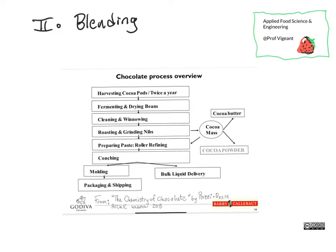This graphic shows a similar process flow diagram to the one I just drew for milk, except this one is for chocolate. We start at the top with cocoa pods, which are what is harvested from the tree, and end up at the bottom with actual chocolate. What I want to call your attention to is what happens after the nibs are roasted and ground — the cocoa mass is broken into its two components: cocoa butter, which is the fat, and cocoa powder, which is the solids.